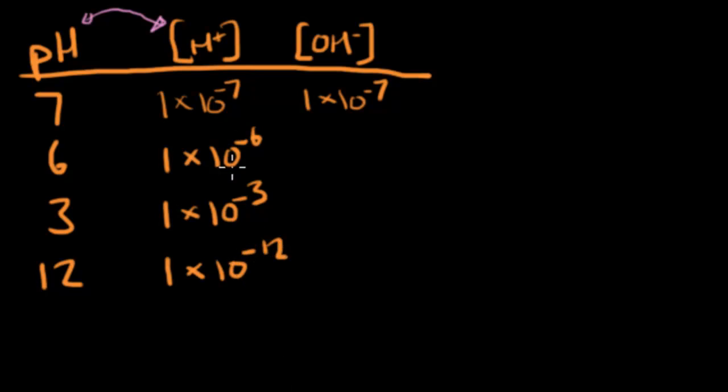So what's the pattern here? I have a whole bunch of negative exponents, but if I get rid of that negative sign, the pH tells me what that exponent is. So pH 7, negative 7. pH 6, negative 6. So on and so forth.